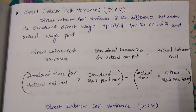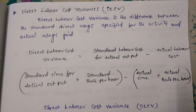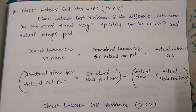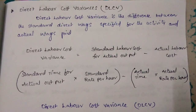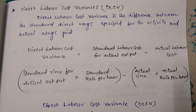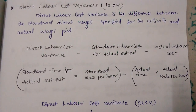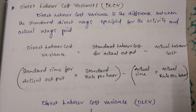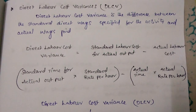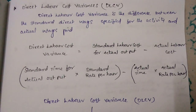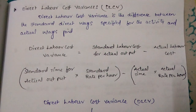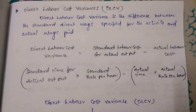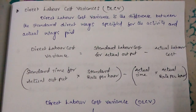The next part is Direct Labor Cost Variance. Direct Labor Cost Variance is the difference between the standard direct labor cost specified for the activity and the actual wages paid. It equals standard labor cost for actual output minus actual labor cost, or equivalently, standard time for actual output multiplied by standard rate per hour, minus actual time multiplied by actual rate per hour.